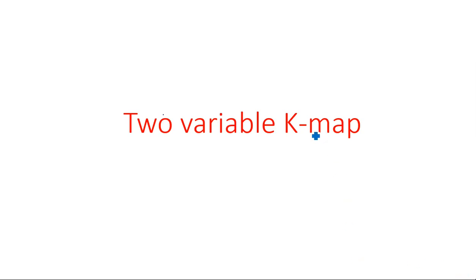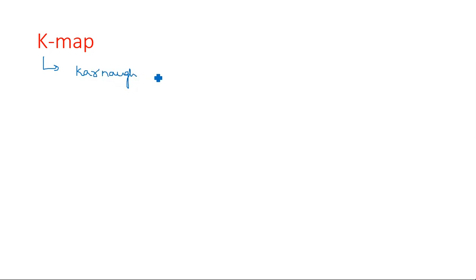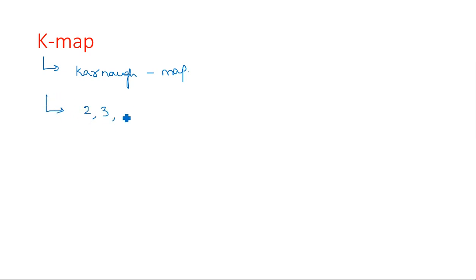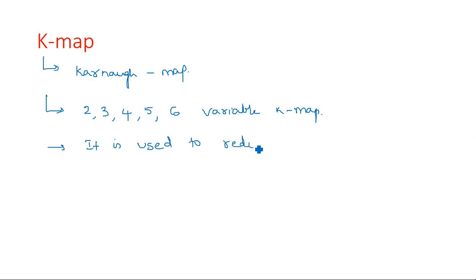Hi everyone, in this video I am going to introduce KMAP. KMAP stands for Karnaugh Map. The main purpose of KMAP is to reduce the boolean expression. Suppose if you are given with a long boolean expression, that long boolean expression can be reduced easily by using this mapping technique — the KMAP, or Karnaugh Map.